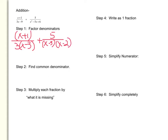Now we are ready to find the common denominator. The first denominator is three times x minus three, and the second denominator is x minus three times x minus two. In order to have a common denominator, we have to have each term represented. Both denominators share x minus three, so that is definitely going to be part of our common denominator. The first fraction also has a three, and the second fraction has x minus two, so both must be included. Our common denominator is three times x minus three times x minus two.